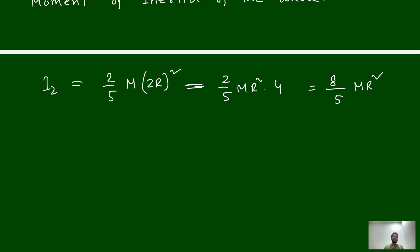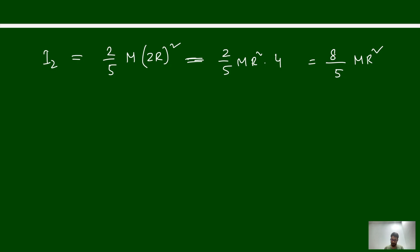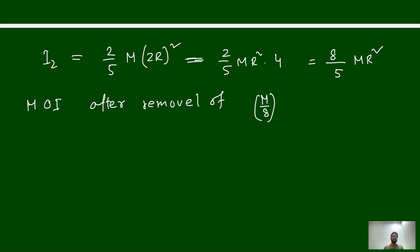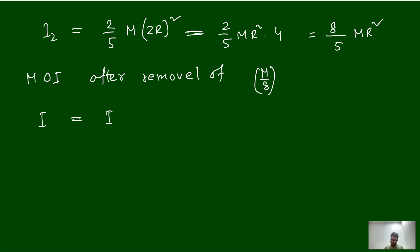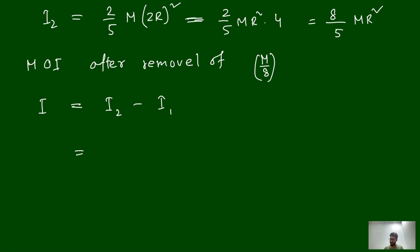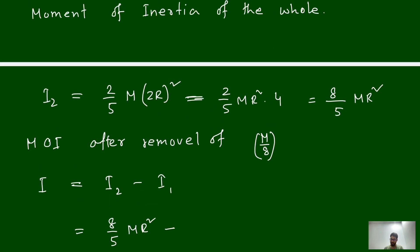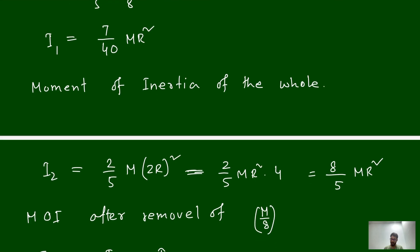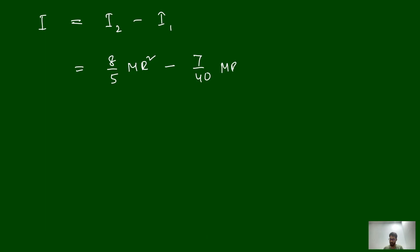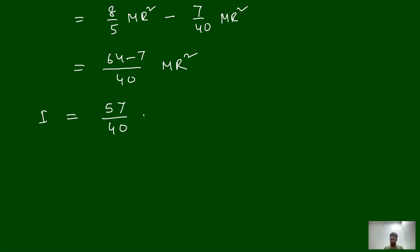Now we calculate the moment of inertia of the rest of the part after removing the smaller sphere of mass M/8. The moment of inertia after removal equals I2 minus I1. So I equals (8/5)MR² minus (7/40)MR². Taking LCM of 40: that is (64/40)MR² minus (7/40)MR², giving I equals (57/40)MR².